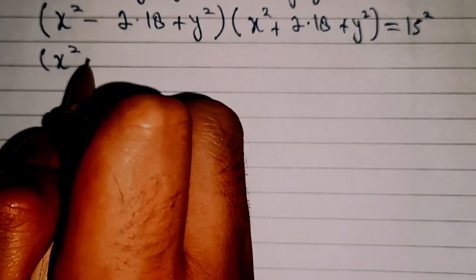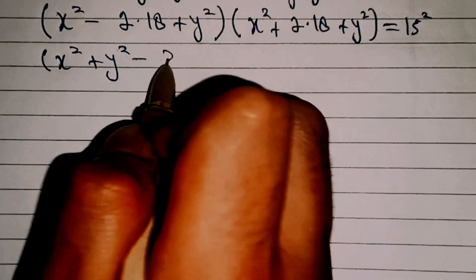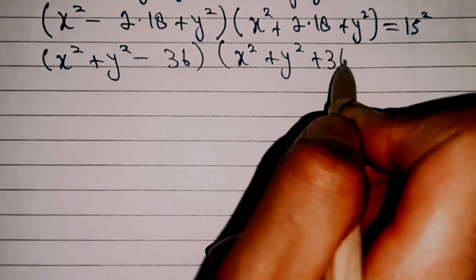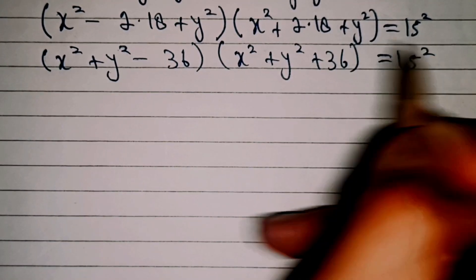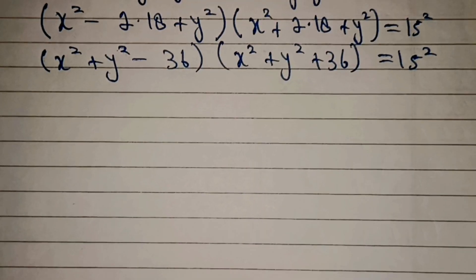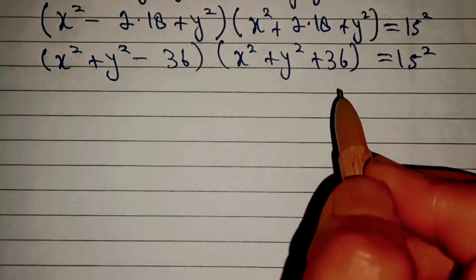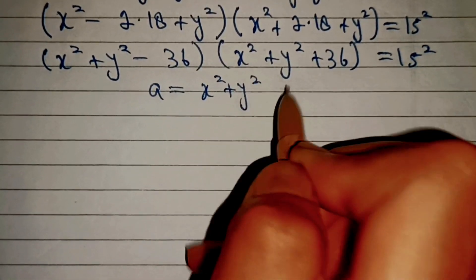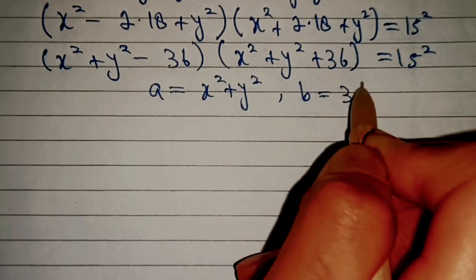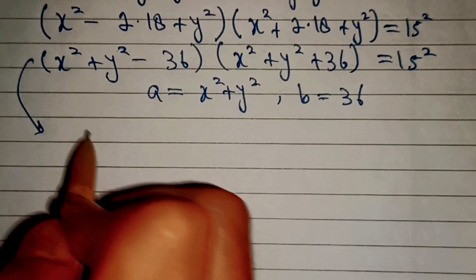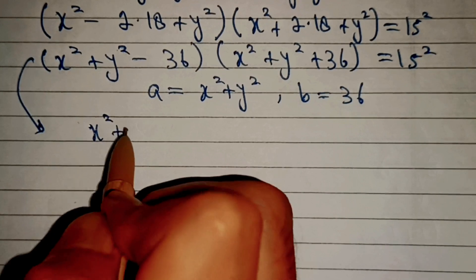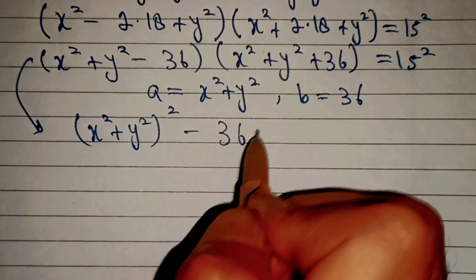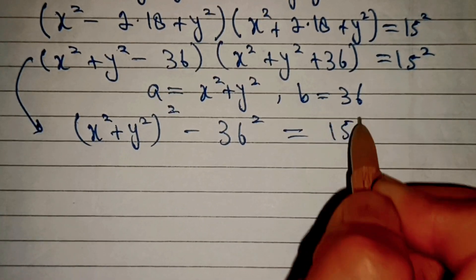This simplifies to (x squared plus y squared minus 36) into (x squared plus y squared plus 36) equal to 225. Now this is in the form (a minus b) into (a plus b), where a equals x squared plus y squared and b equals 36. So we can write this as (x squared plus y squared) whole squared minus 36 squared equal to 225.